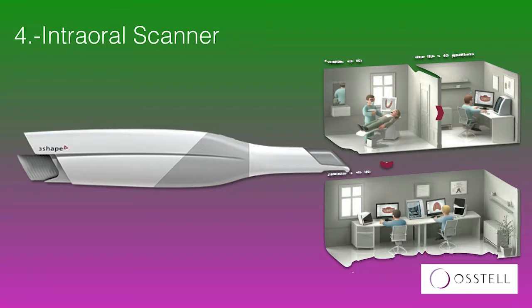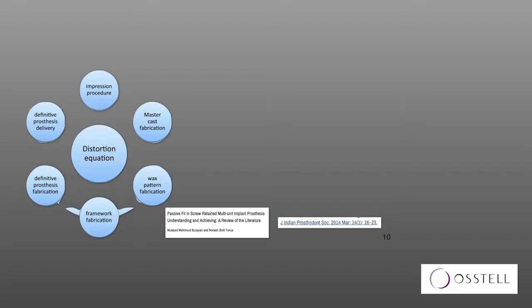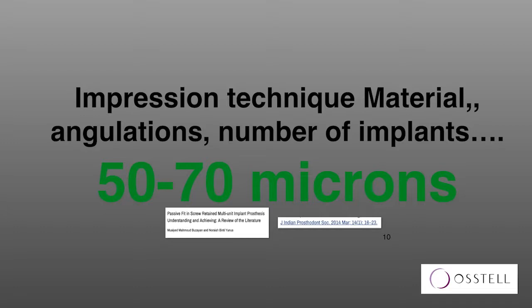For the intraoral scanner, we are using the TRIOS from 3Shape — we have two units, the color and the black and white. We started using it in 2012 in a chairside model and also sending to an external lab. Our model is to place the implants, scan the patient, and produce the prosthesis in-house chairside, from single unit to full arch.